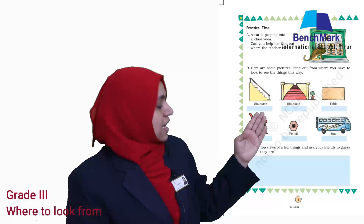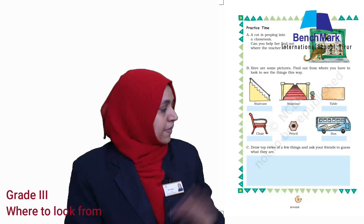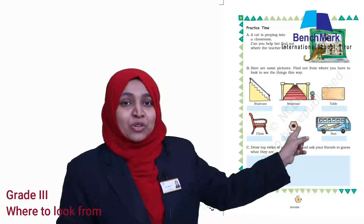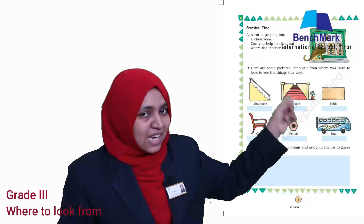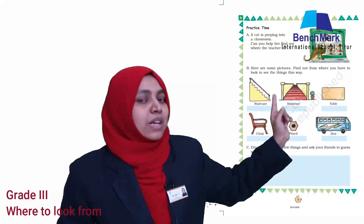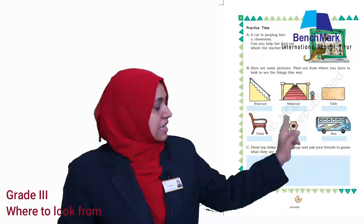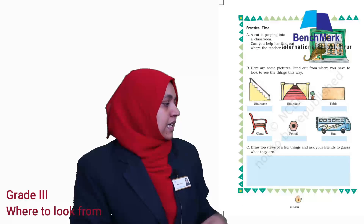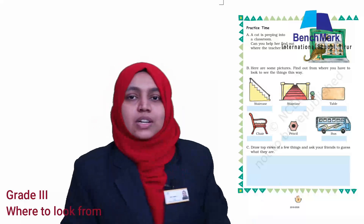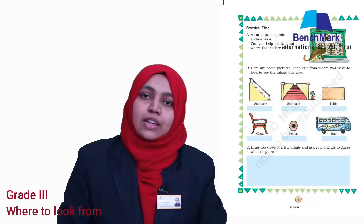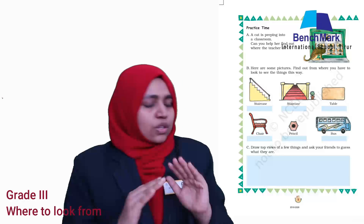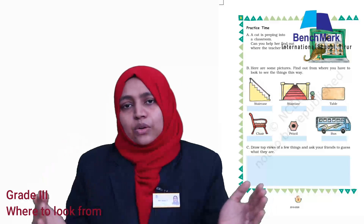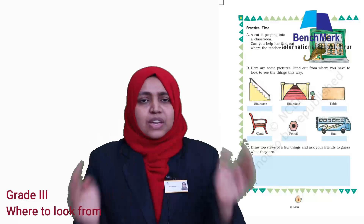This is the side view of a chair. Next is the top view of a pencil — this is the first picture that was shown, it is the top view of a pencil. And the last picture is the side view of a bus. So that is it: even if the object is the same, if we look at it from different angles or different sides, it looks different.